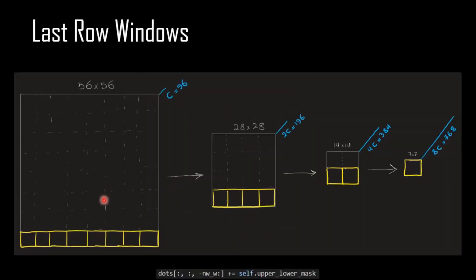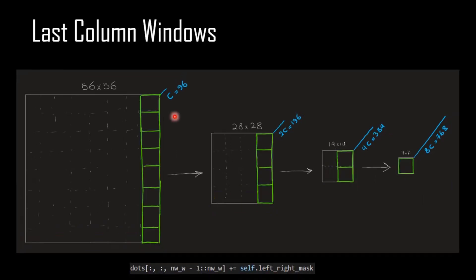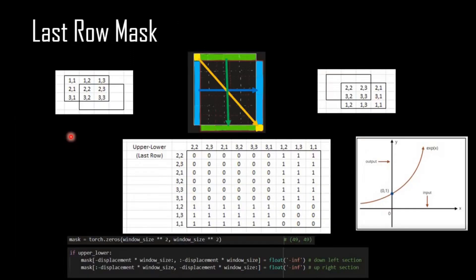This happens for all of the windows in the last row. For example, in stage one we have eight windows that are affected, in the second stage four windows, the third stage two windows, and the last stage only one window. Also for the last column windows, this happens for all of the stages — we need to consider masking for all of the last column windows.